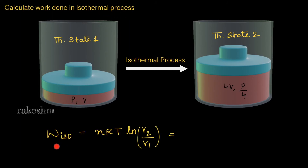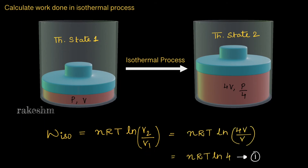The work done by the gas in the isothermal process is given by nRT·ln(V2/V1), where V2 is the volume in state 2 and V1 is the volume in state 1. Since the final volume is 4 times the initial volume, V2/V1 = 4V/V, so the work done in the isothermal process is nRT·ln4.